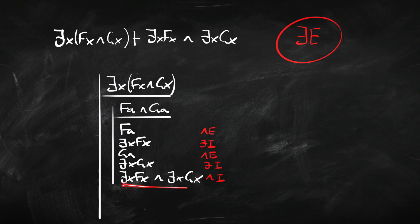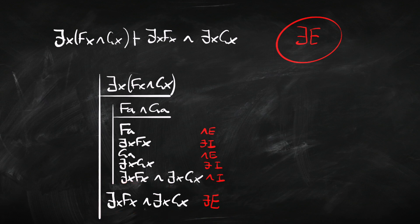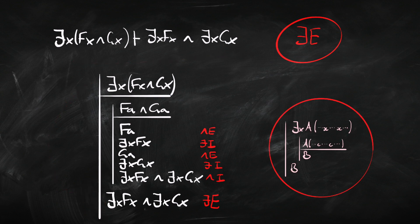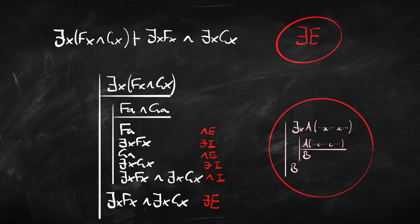That's the conclusion we want, but at the moment it's within the scope of our assumption. That's exactly the case where our existential elimination rule says we can move this from inside to outside the scope. So we get our conclusion outside the scope of our assumption. The reason we can move it is because that's what existential elimination allows us to do. This one is tricky — you've got to memorize the rule and remember that it allows us to move from B within the scope of the assumption to B outside that scope.